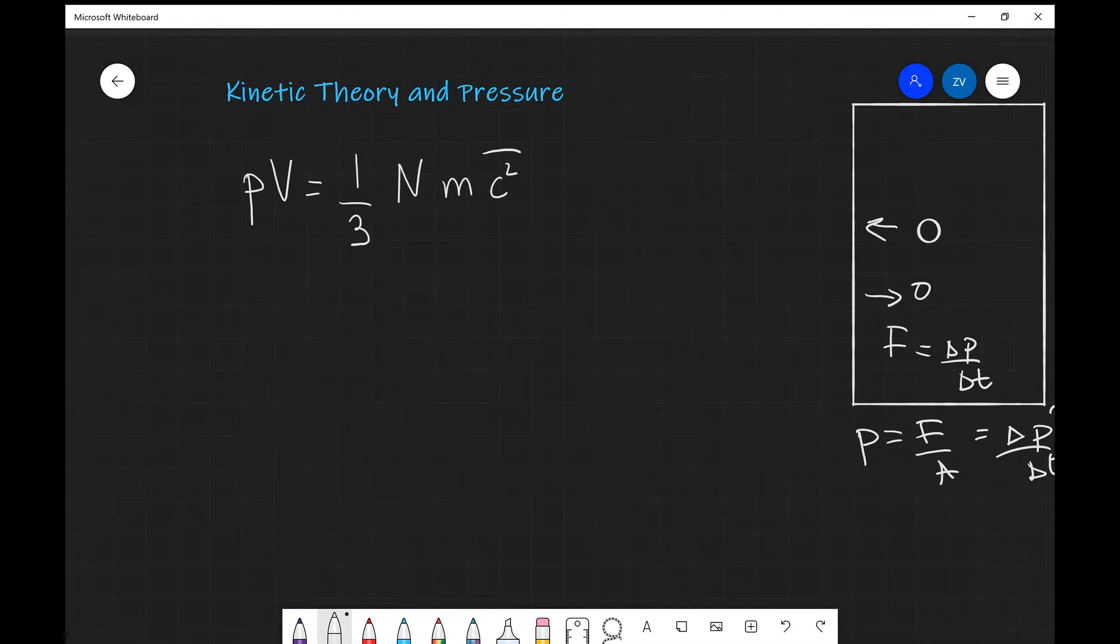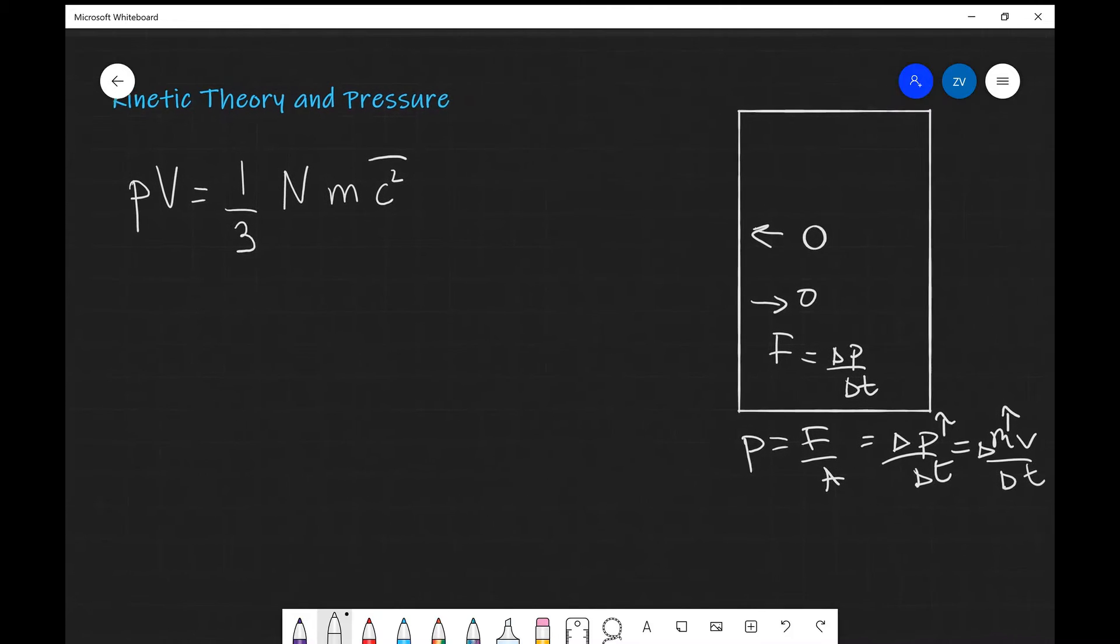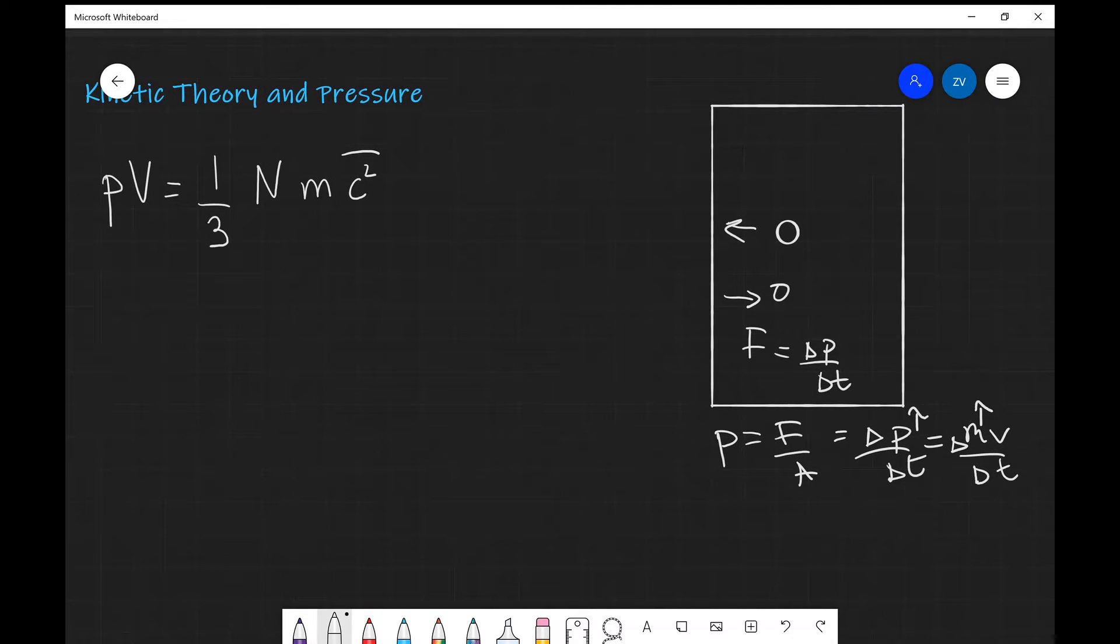This equation makes physical sense and we can convince ourselves of that if we remember what actually causes pressure. Pressure is caused when one individual molecule makes a collision with the wall of a container and there is a change in momentum during that collision, which is the rate of change of momentum delta P over delta T.